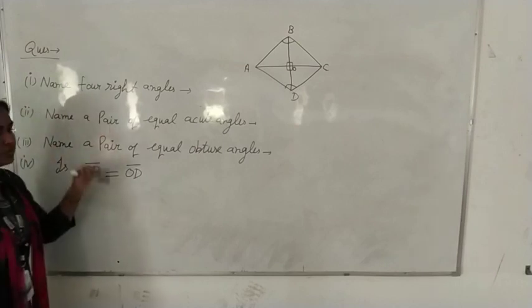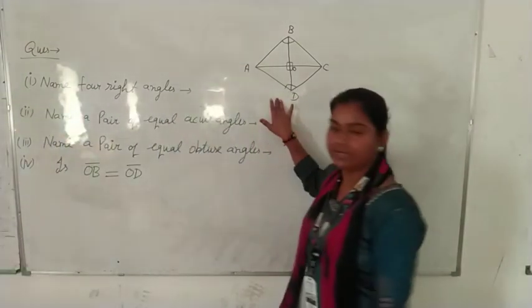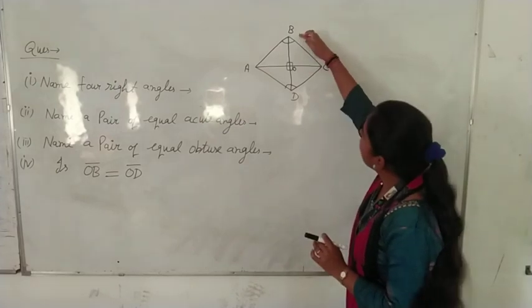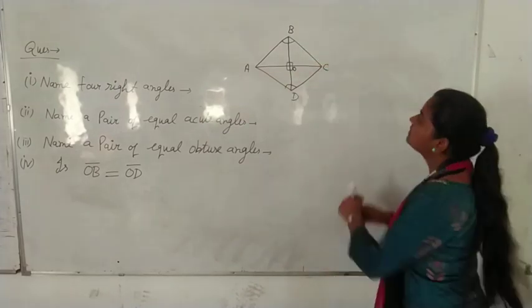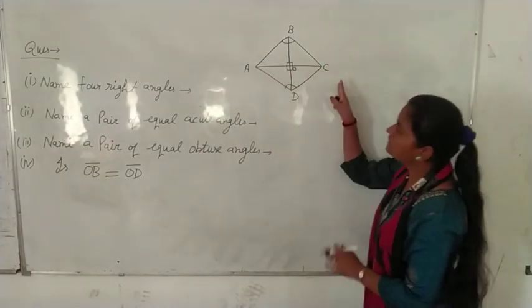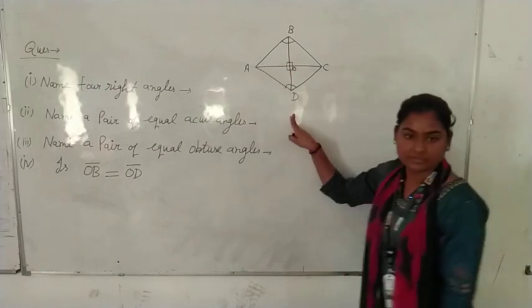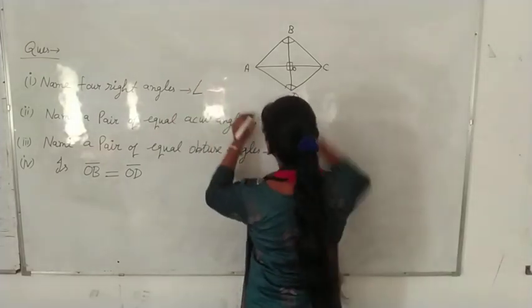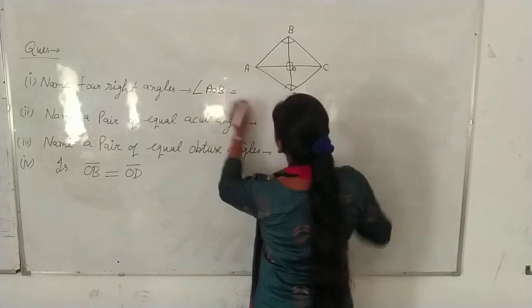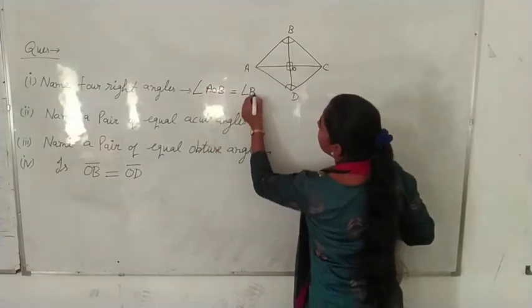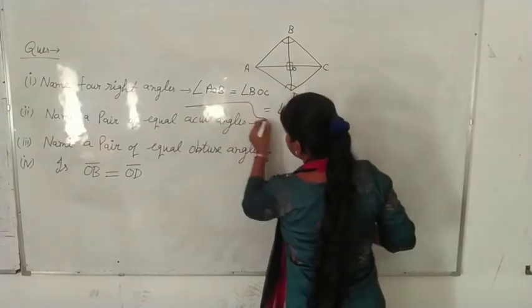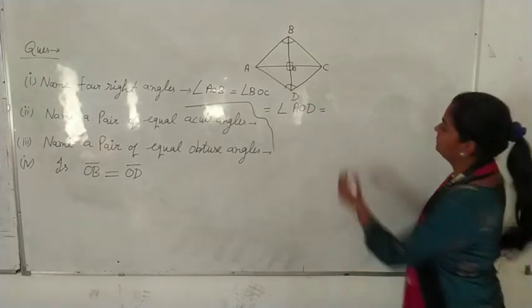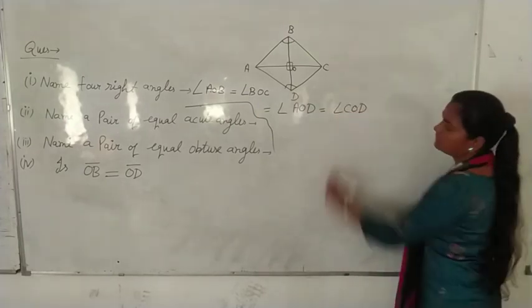First, name four right angles. In this, diagonal AC is perpendicular to OB. It means angle AOB is 90 degrees, angle BOC is also 90 degrees, angle AOD is 90 degrees, and angle COD is also 90 degrees. So we have four right angles: angle AOB equals angle BOC equals angle AOD equals angle COD, all right angles.